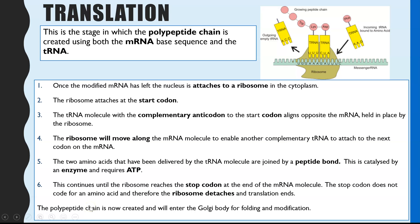That gives you your finished polypeptide chain — the primary sequence or primary structure of a protein. To get the final 3D shape, this links back to your knowledge of cell organelles: the polypeptide chain will then go to the Golgi body for folding and modifications to make the final finished product.